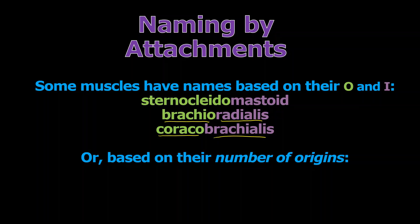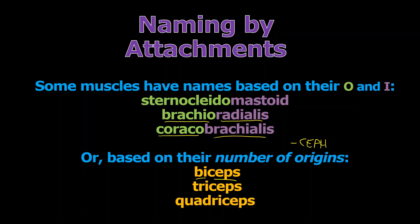Sometimes you can name muscles based on their number of origins, sometimes called heads. The word for head can appear as -cep or -capit in muscle names. Biceps would mean two heads or two origins — though you can't just call a muscle 'the biceps' because there's another biceps down in the leg. Triceps must have three heads or three origins, and quadriceps as a group would have four heads or four origins.